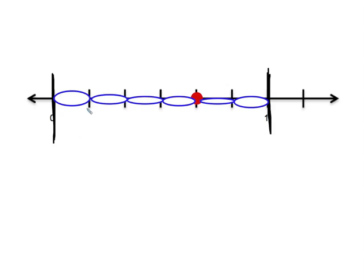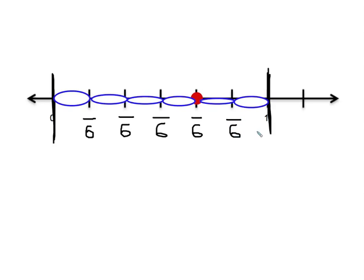Now I'm going to write my fraction on the lines, because the lines represent when you've gone through one of the pieces. So when I get to each line, I will have gone through something out of six pieces — something out of six, something out of six, something out of six, something out of six.